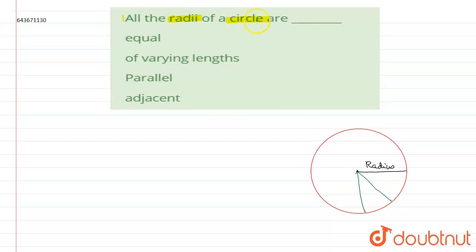Now we have to check whether the radii of the circle are equal, of varying length, parallel, or adjacent. You can observe that the radii of the circle are all of equal length. So we can conclude that